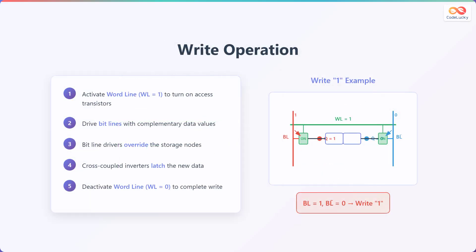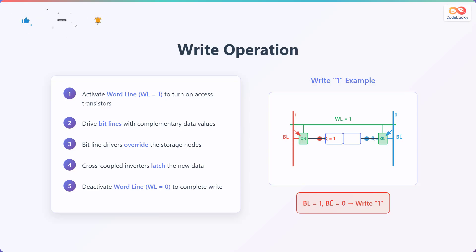Here are the steps involved in a write operation. First, the word line is activated by setting it to 1, which turns on the access transistors. Next, the bit lines are driven with complementary data values. The bit line drivers then override the storage nodes. The cross-coupled inverters latch the new data, and finally, the word line is deactivated by setting it to 0 to complete the write operation. As an example, to write a 1, the bit line is set to 1 and the bit line bar is set to 0.